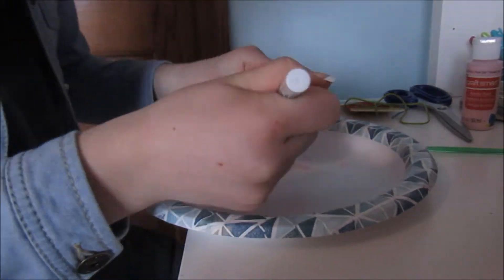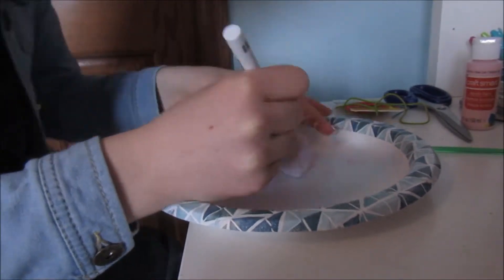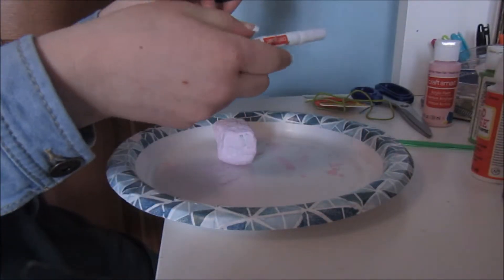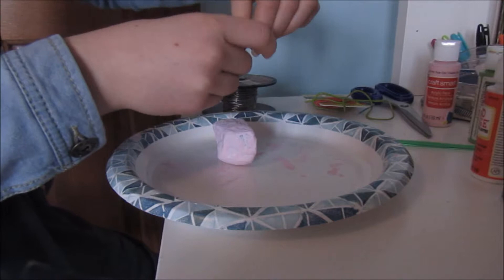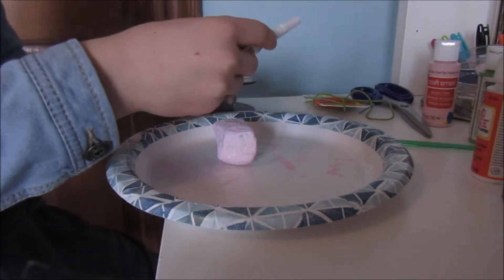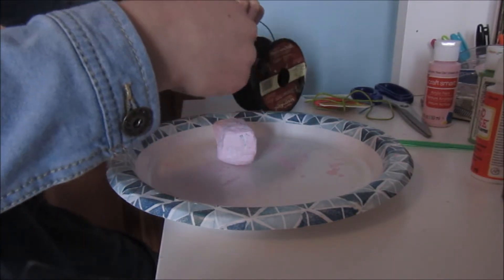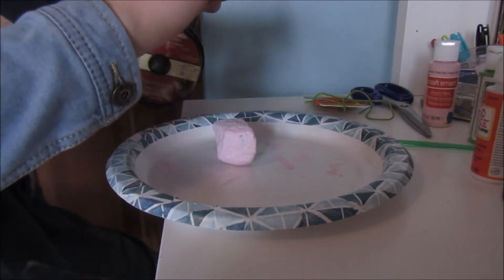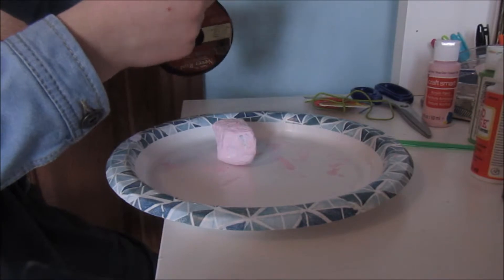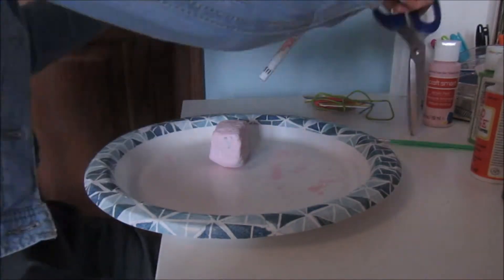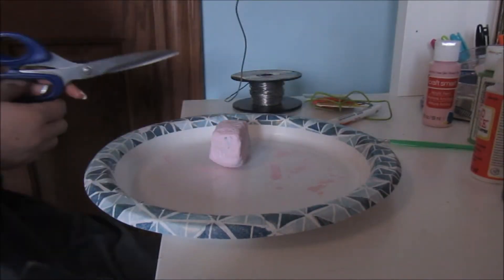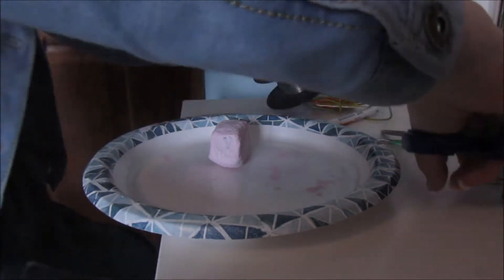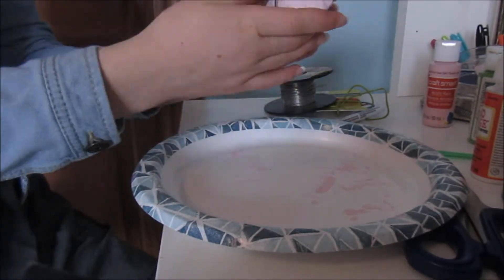Now you're going to take a marker and wrap your wire around it just about three times, and then you can slide the wire off. That's just so you have a good space to put your picture in. Then you can cut your wire and wrap it around the rock.